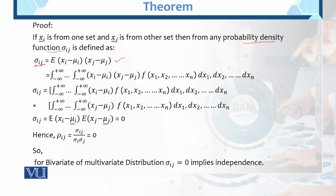In the discrete case we have the covariance value. Now when we move to the continuous case, opening the expectation: integral from minus infinity to infinity, up to minus infinity to infinity, of (xi minus mu) into (xj minus mu) times the probability density function. So sigma_ij equals the integral from minus infinity to infinity. We then separate the ith term and the jth term.